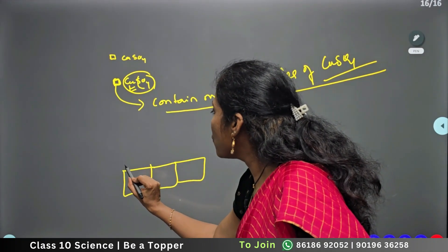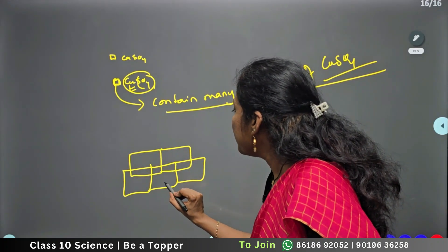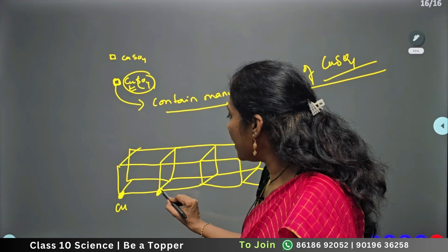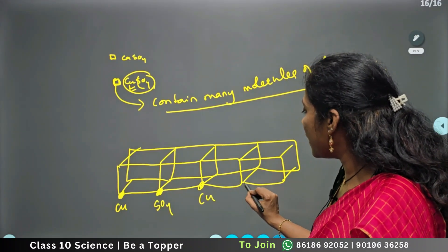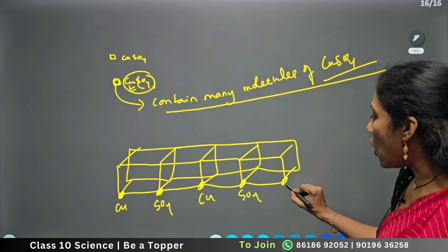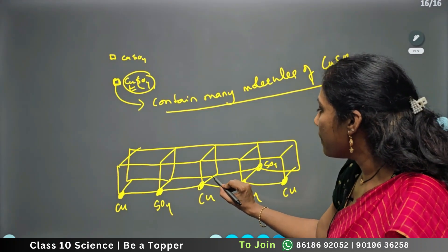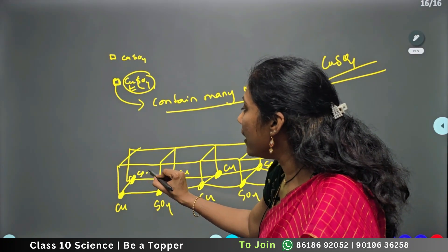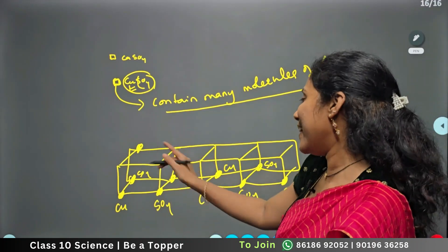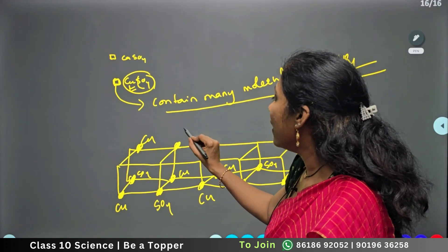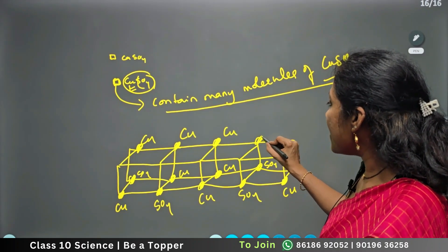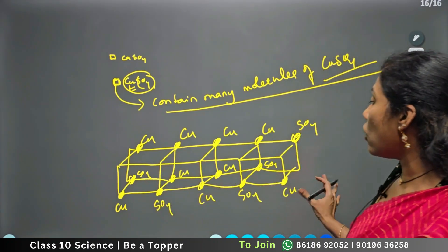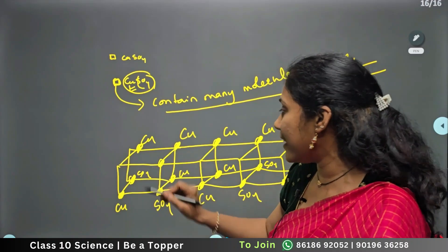Looking at this three-dimensional structure: here is a copper atom, here can be a sulfate ion, here again a copper, here again a sulfate — copper atoms and sulfate atoms are arranged in a three-dimensional way. They are not necessarily arranged alternately; they can be arranged in whatever pattern the crystal is designed. You will study this in detail in higher classes.